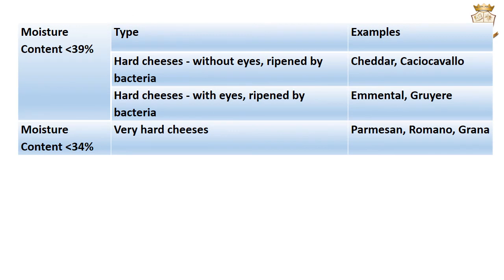Hard cheeses contain less than 39% moisture and may be ripened by bacteria resulting in eye or hole formation, or may be unripened by bacteria. Examples include Cheddar, Emmental and Gruyère. Very hard cheeses contain less than 34% moisture; examples include Parmesan, Romano and Grana.